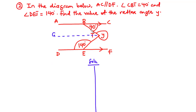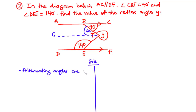We know that angle CBT and angle BTG are alternating angles, and alternating angles are equal. Therefore angle CBT equals angle BTG, and that equals 40 degrees. We will then find the full angle at point T and use the fact that angles at a point add up to 360 degrees to find the reflex angle Y.